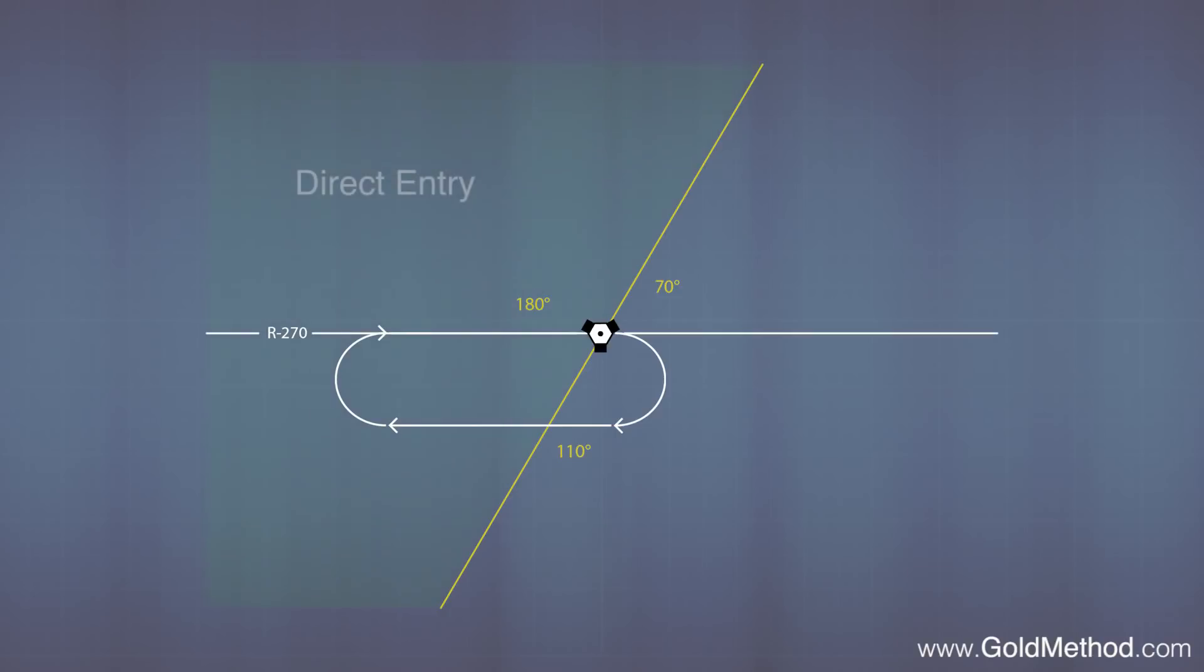Now remember, the 180 degrees sector to the side with the inbound course is going to be our direct entry sector. The big one is direct. The small wedge to the upper right will be our teardrop entry sector, and the medium wedge below is our parallel sector.